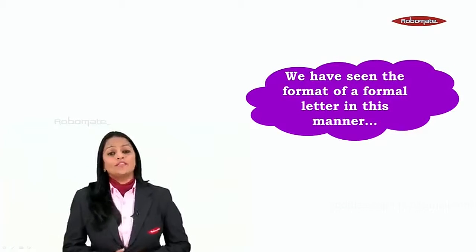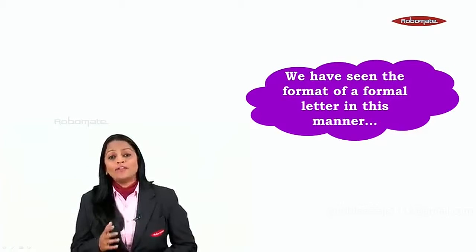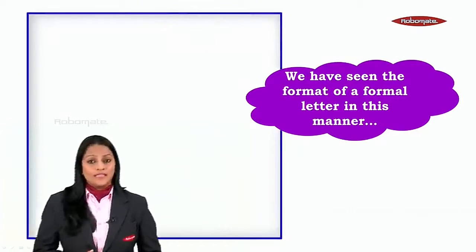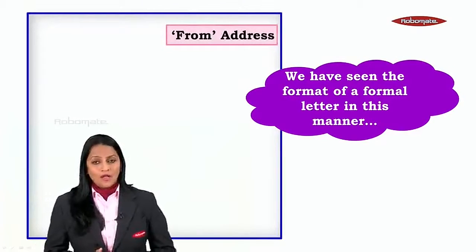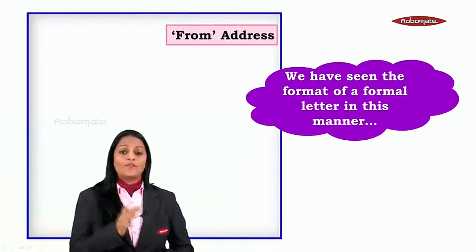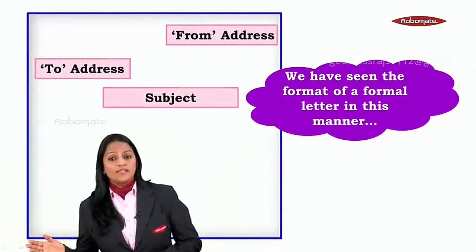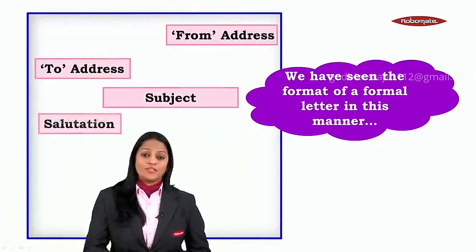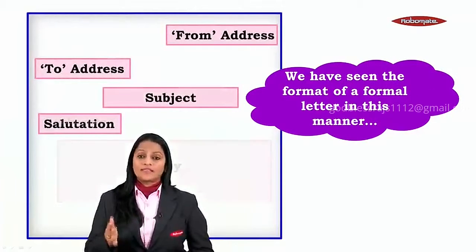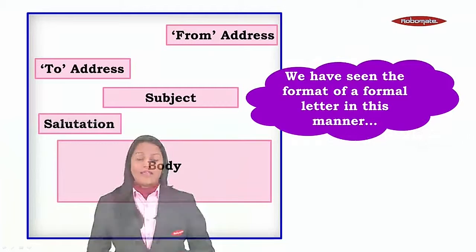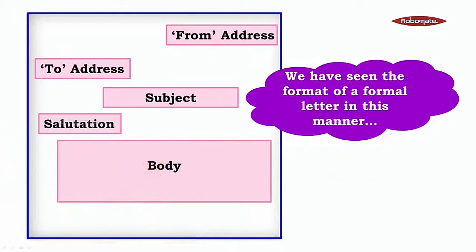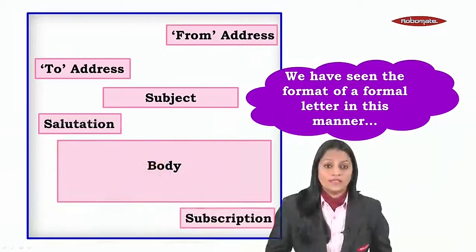We have seen the format of a formal letter where we had the from address in the right-hand corner, the to address on the left, the subject in the center, the salutation again on the left, the body with three paragraphs, and the subscription. The date comes with the from address.